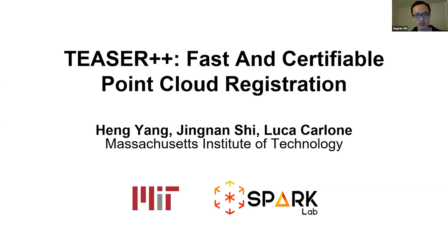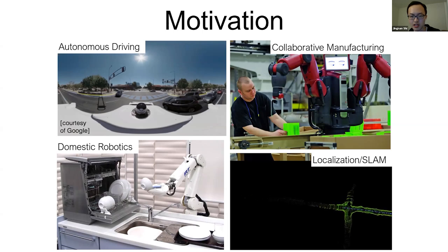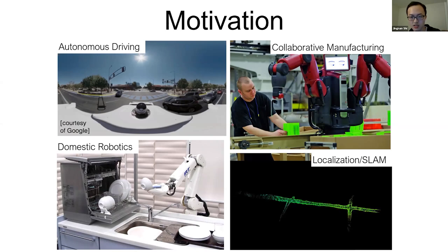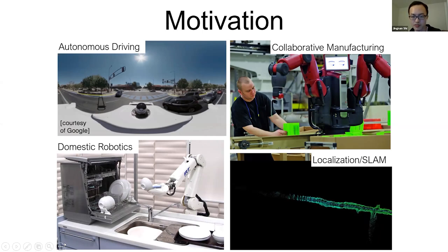So first, what exactly is point cloud registration? Essentially, point cloud registration is a problem that focuses on aligning multiple point clouds together. There are a lot of applications for this, especially in autonomous driving, where you need to stitch LIDAR scans together very quickly to figure out the surroundings of the vehicles. In robotic manipulation, point cloud registration is also necessary for robots to determine the locations of objects on assembly lines or in kitchen environments. More broadly, it can be used to solve localization and SLAM problems.